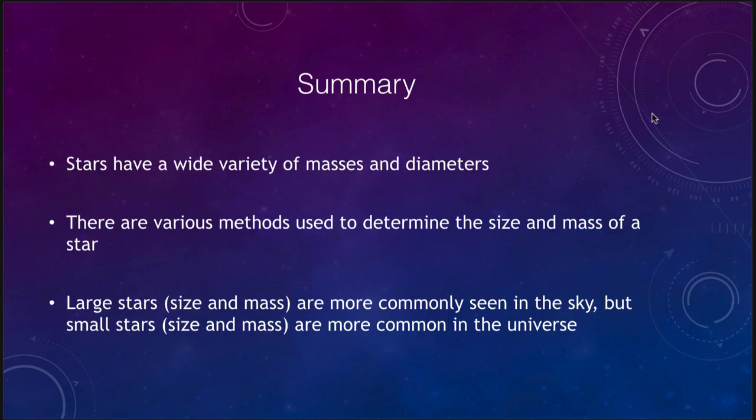Let's finish up with our summary. Stars have a wide variety of masses and sizes. They vary from very small mass and small diameter stars to very large mass and large diameter stars. We've talked about various methods that we can use to determine the sizes and the masses of stars. Typically the large stars are more commonly seen in the sky, but it is the small size and mass stars that are really more common in the universe. The difference is we can see these stars from very large distances.